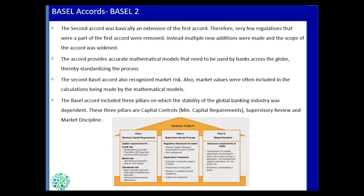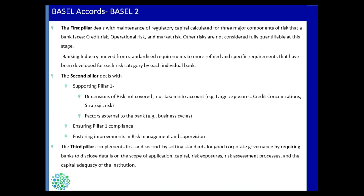The third pillar is market discipline. It gives guidelines and sets standards for good corporate governance in the market. This helps investors and depositors have more confidence in the banking system and increases transparency so they know where banks actually stand in terms of their business performance. Requirements include banks disclosing their scope of application, their capital, their risk exposure, and how they assess their risk — so that investors, depositors, and the broader economy have confidence in those banks.